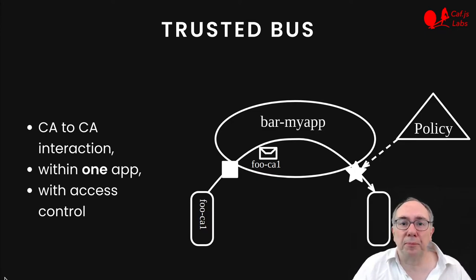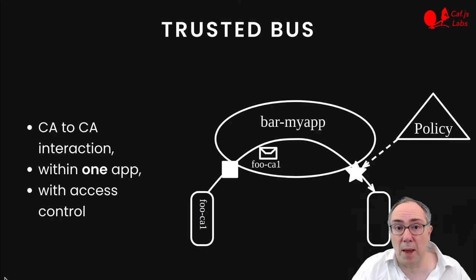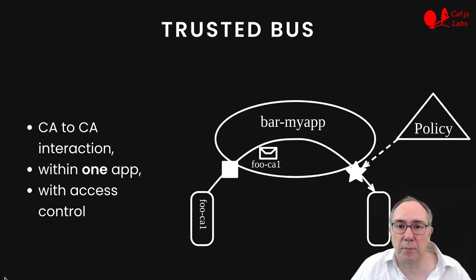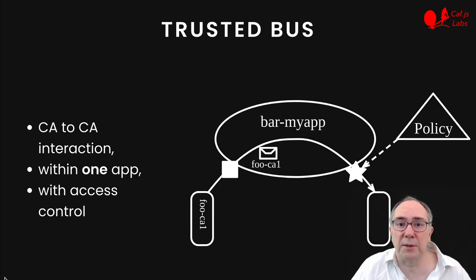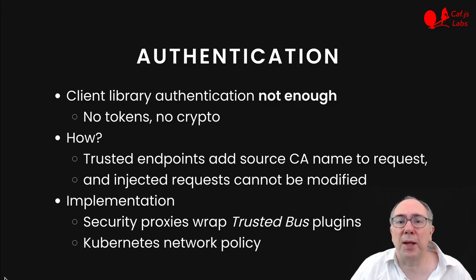What is the trusted bus? The trusted bus mediates interactions between cloud assistants within one app and ensures some access control policy is always enforced. For example, if we have a cloud assistant foo-ca1 that wants to interact with another cloud assistant, it will inject a request into that bus, and the bus will always guarantee that this request is properly authenticated. When the request arrives to its destination, before invoking any methods on the cloud assistant, we will perform an access control check based on whatever policy you have defined.